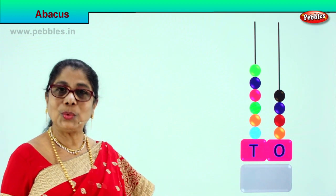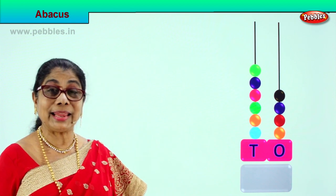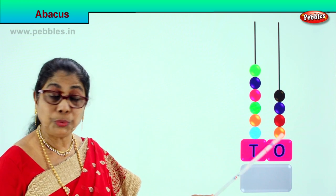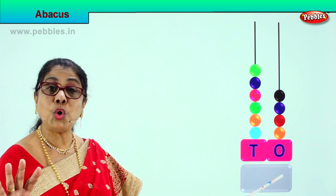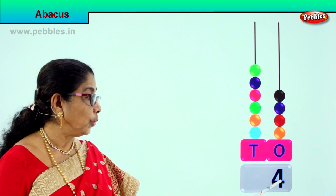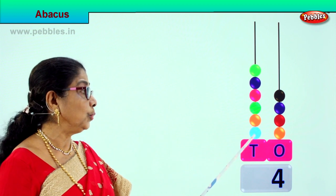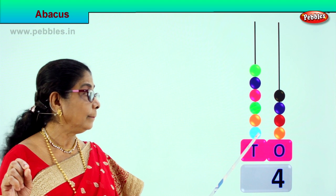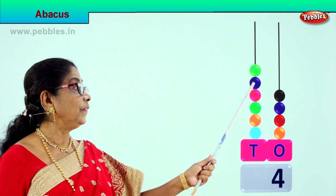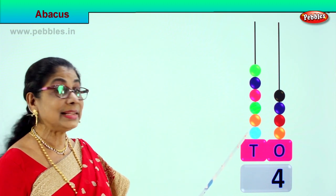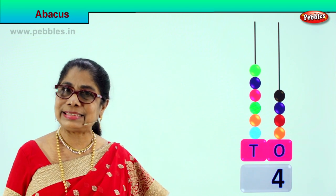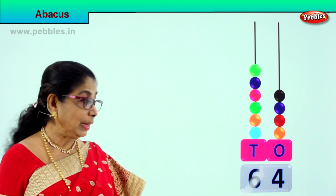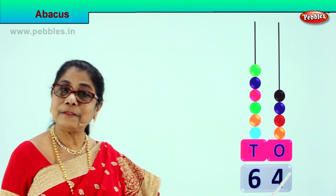We are learning to count tens and ones using an abacus. Let's count the ones first: 1, 2, 3, 4. In the ones place we have 4, so we write 4 here — that means 4 ones. Now we count the tens place. Every bead is 10, so we count: 10, 20, 30, 40, 50, 60. There are 6 beads — that is 6 tens.